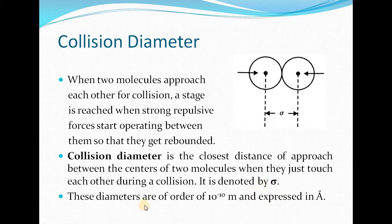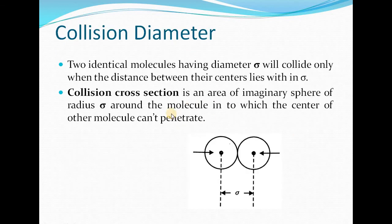These diameters are of the order of 10⁻¹⁰ meters, so they are expressed in angstroms. When two molecules come for collision, the closest distance of approach between their centers is the collision diameter σ. Two identical molecules of diameter sigma will collide only when the distance between their centers lies within this range; if the distance is greater than sigma, there will be no collision.